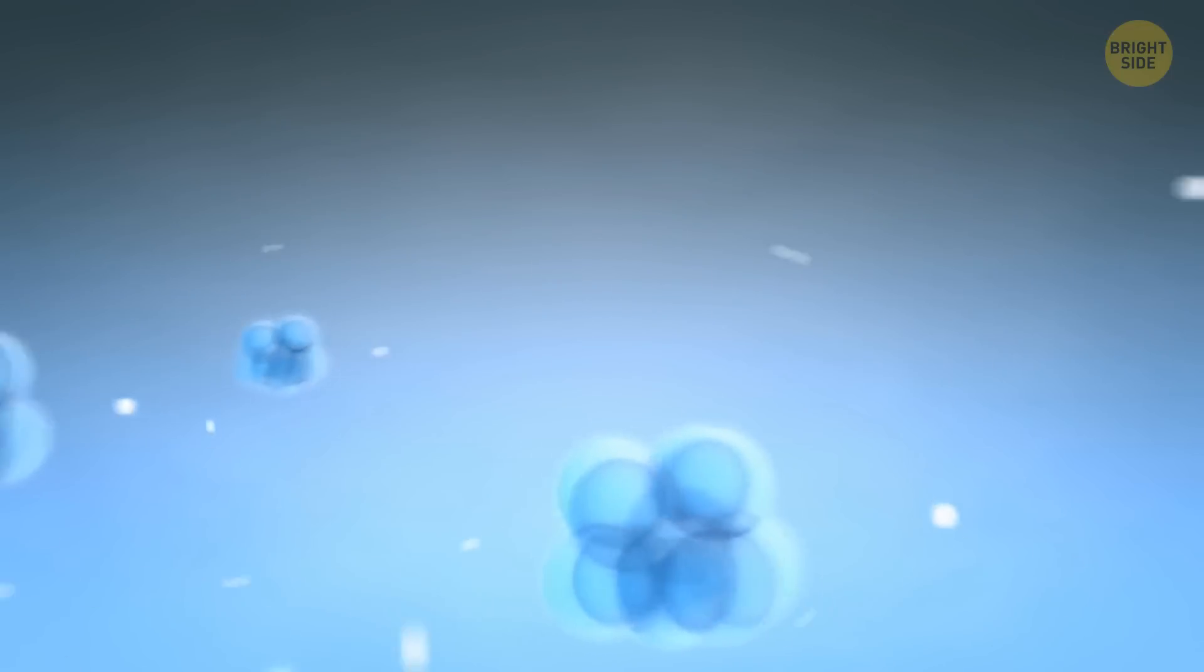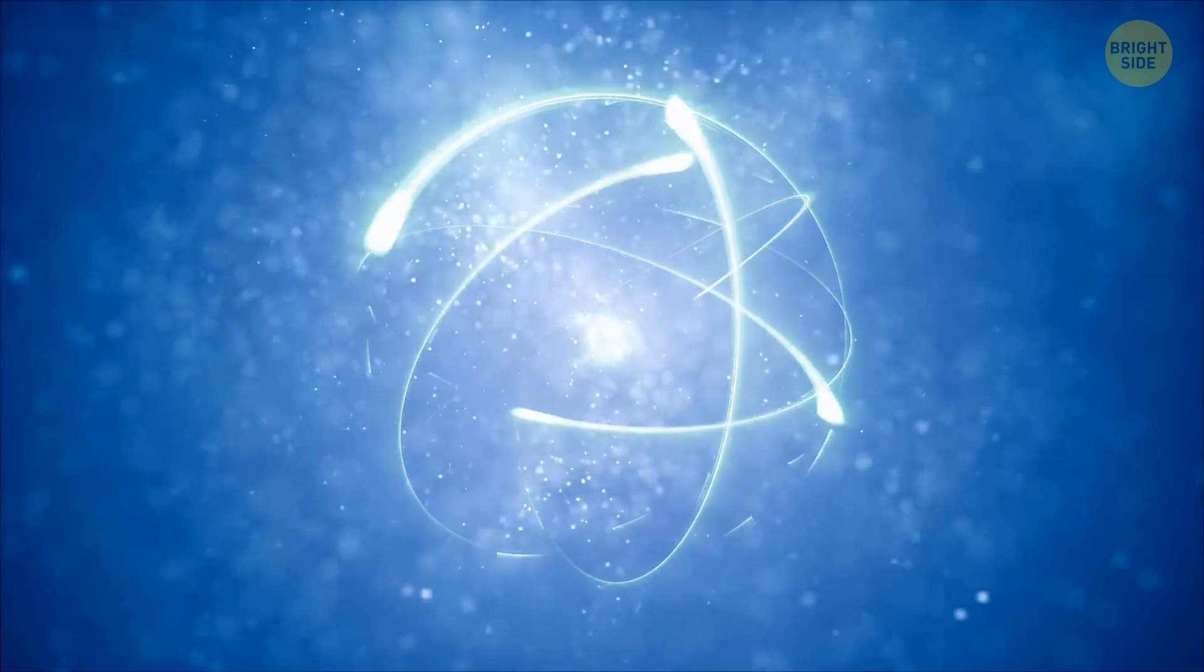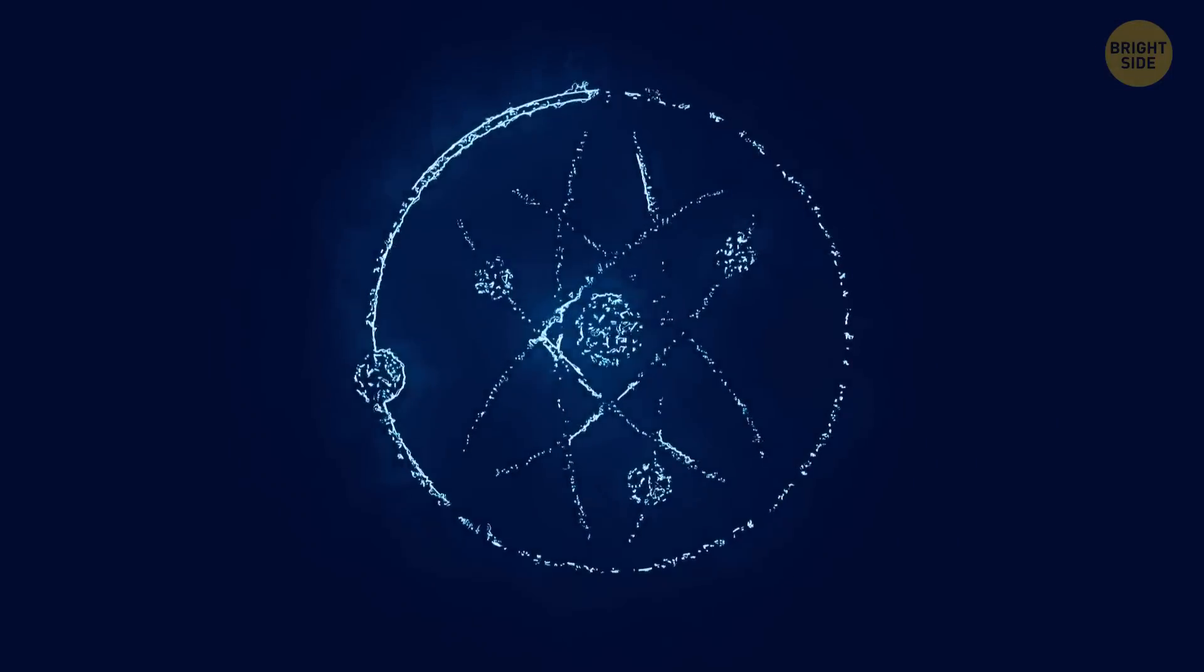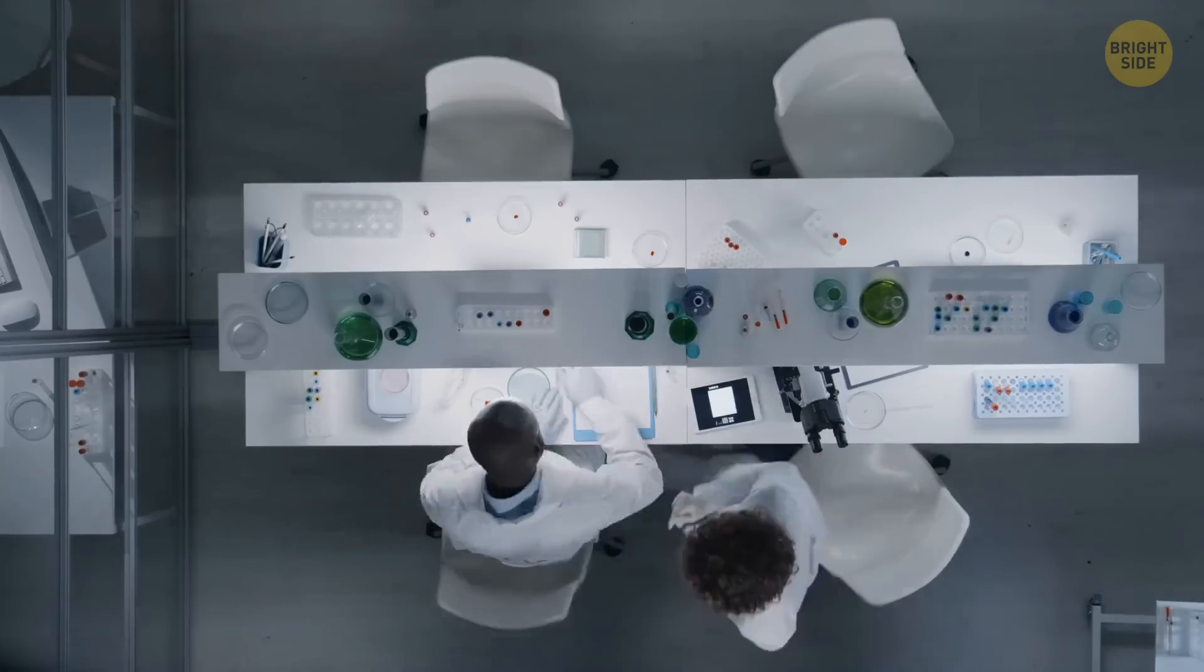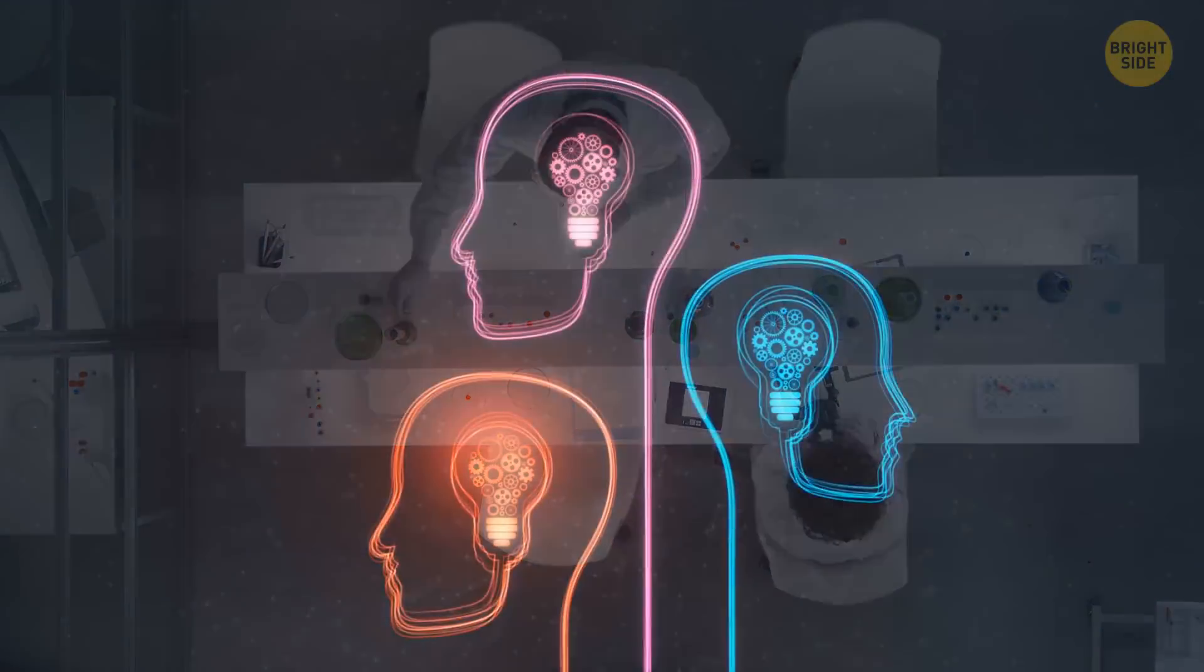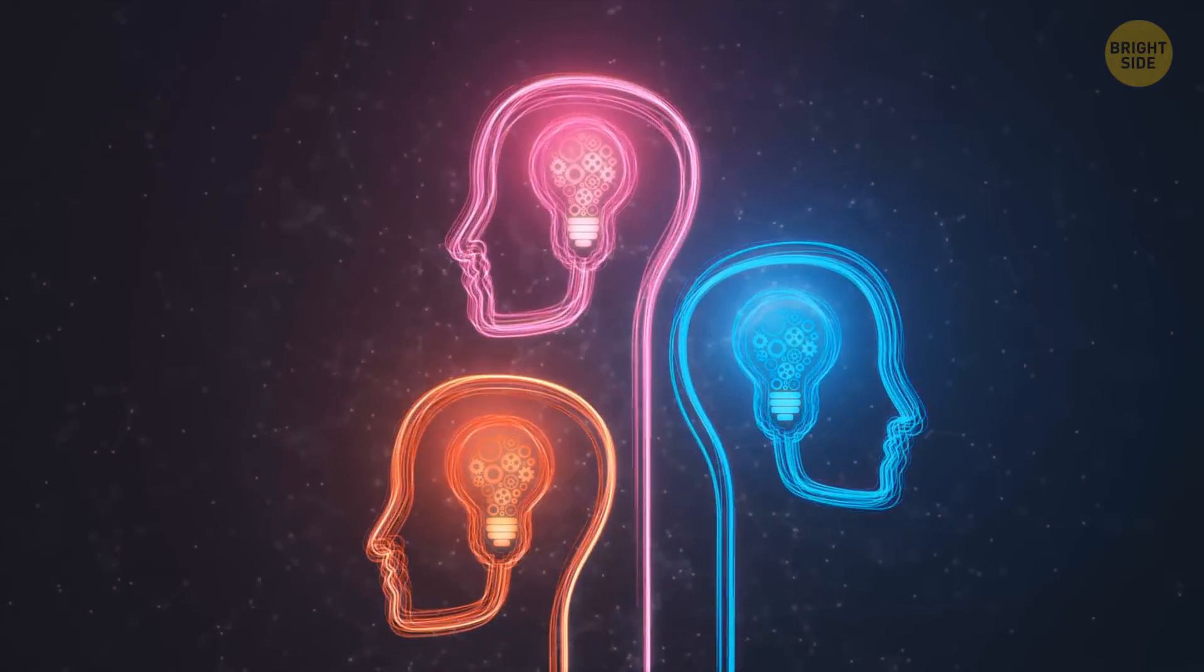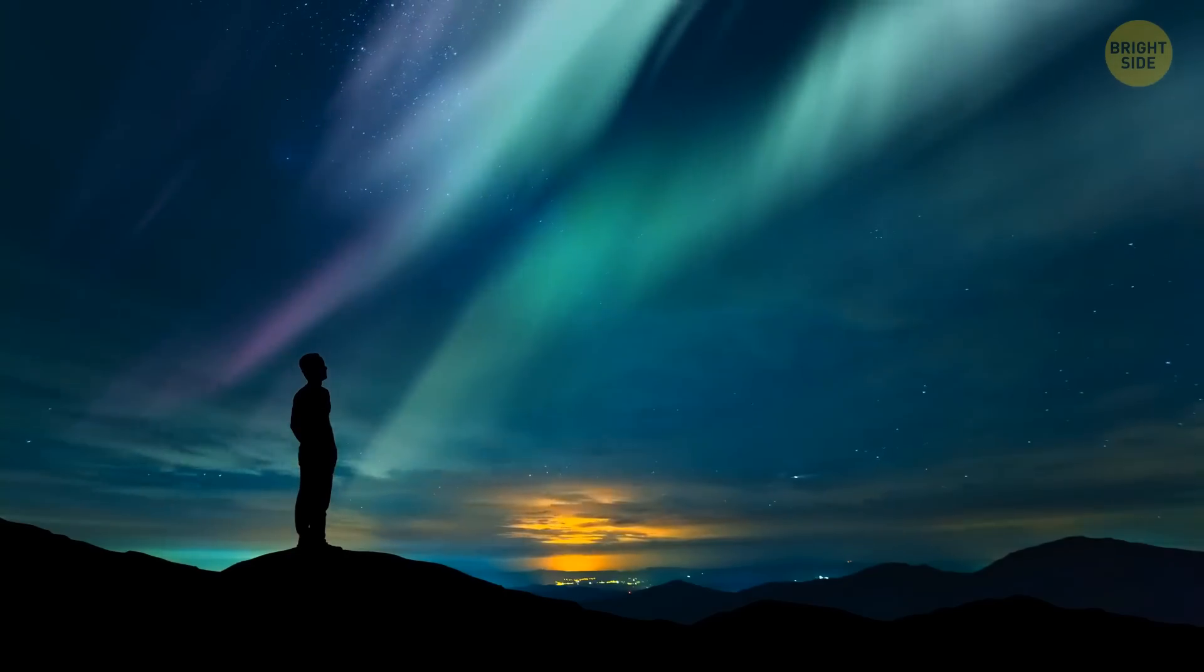But when it happens in a Bose-Einstein condensate, the bosons don't just become still like statues. Instead, they gather in the lowest possible energy state and kind of form a single entity. They start to behave collectively, as if they're part of one big super atom. Their motion becomes highly coordinated and synchronized. It's like the collective mind from Rick and Morty. Studying Bose-Einstein condensates helps scientists understand the strange and quantum nature of matter. It helps us to unlock the secrets of a hidden realm where the rules of the ordinary world no longer apply.